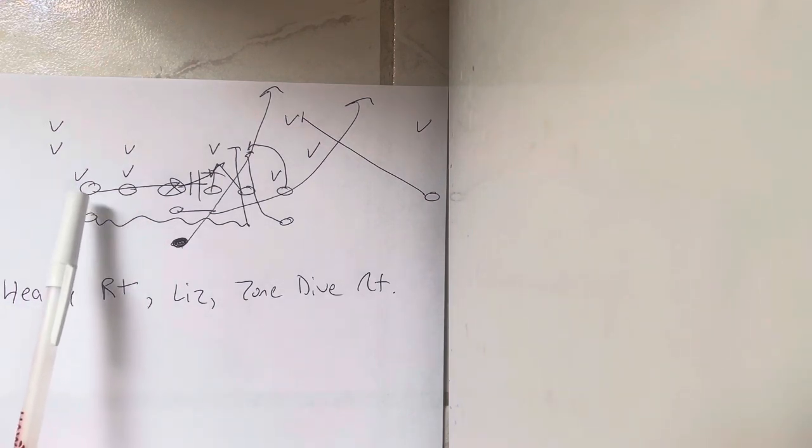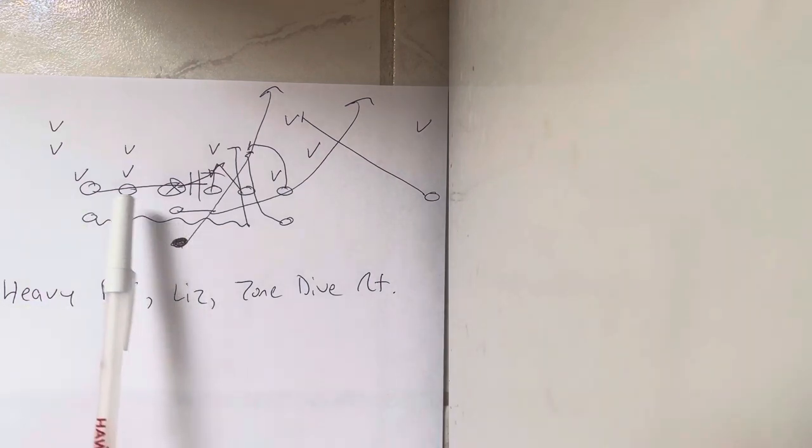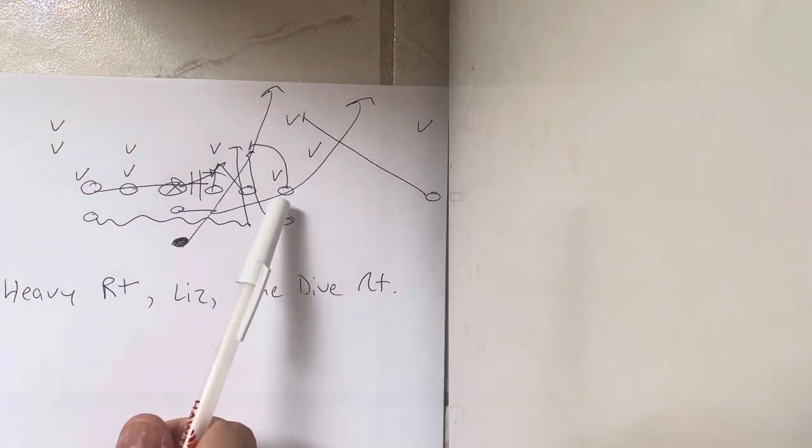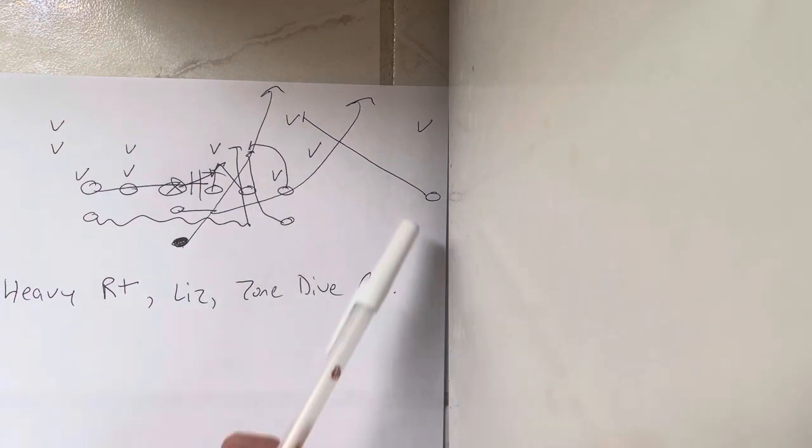He puts his dominant hand down 3 1⁄2 feet away from the guard with his hand at the heels of the center, 3 1⁄2 feet away from the tackle. The receiver's on the numbers, inside foot up, outside foot back, fingers down. So you're in the heavy formation.